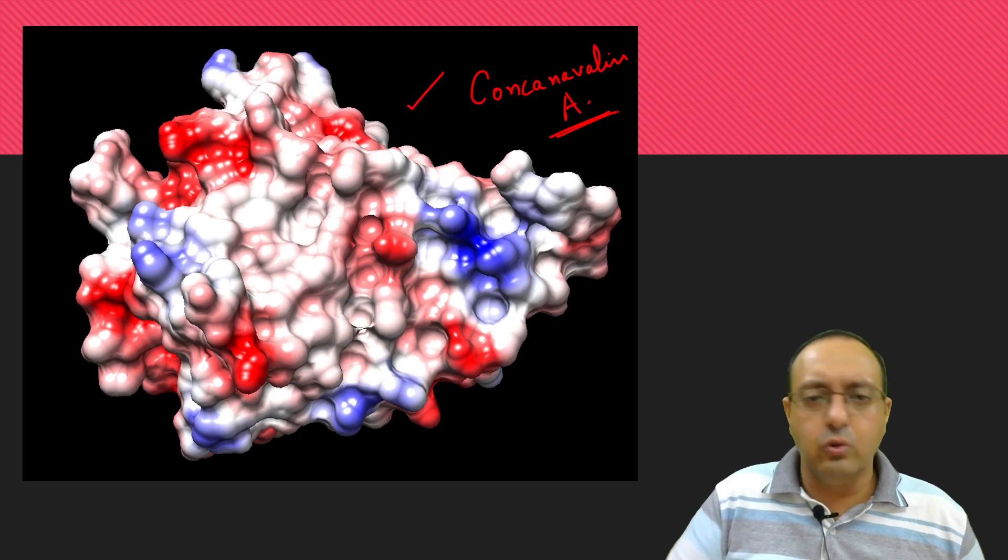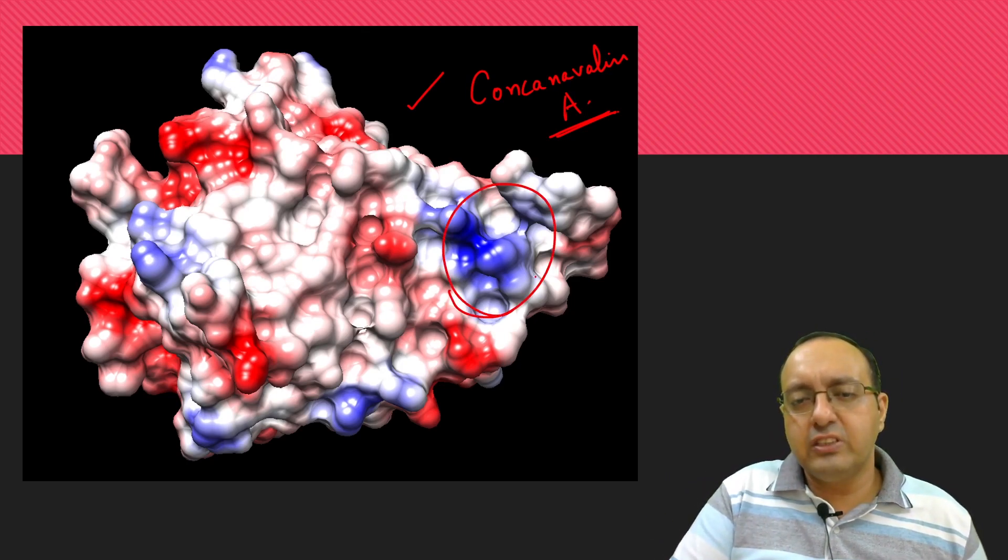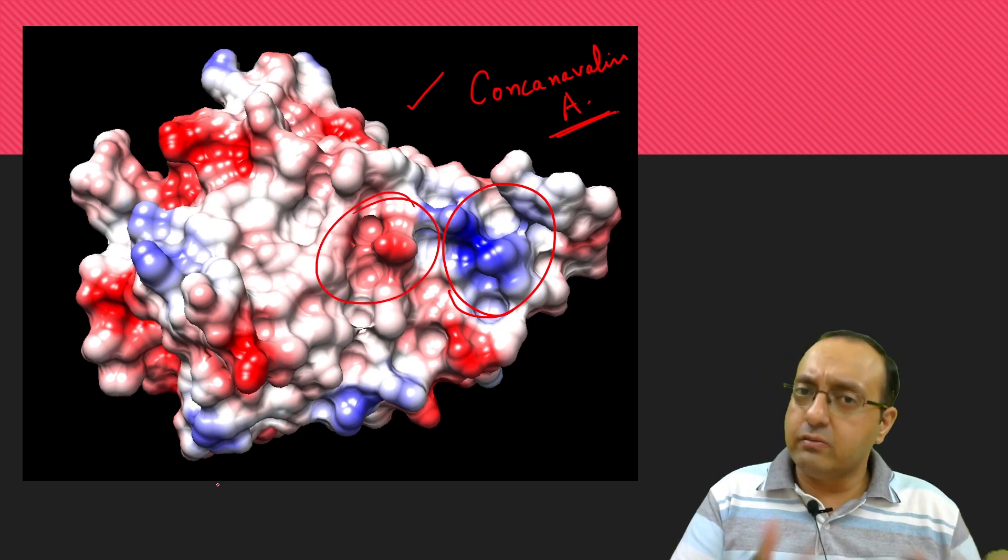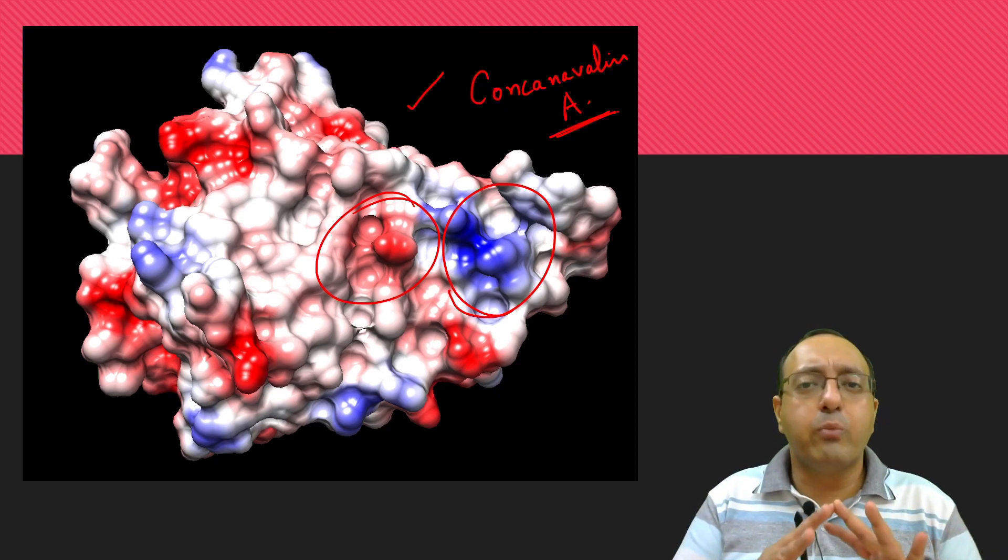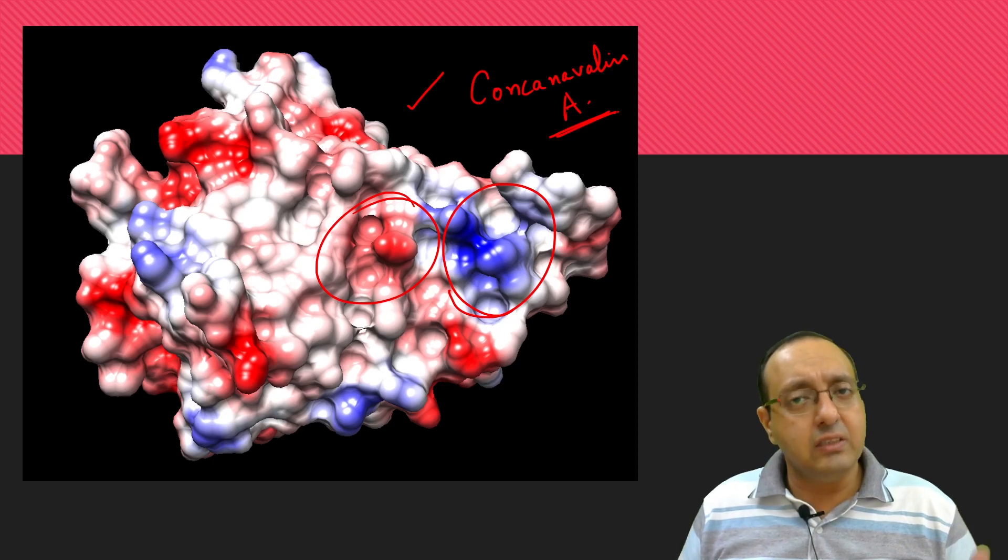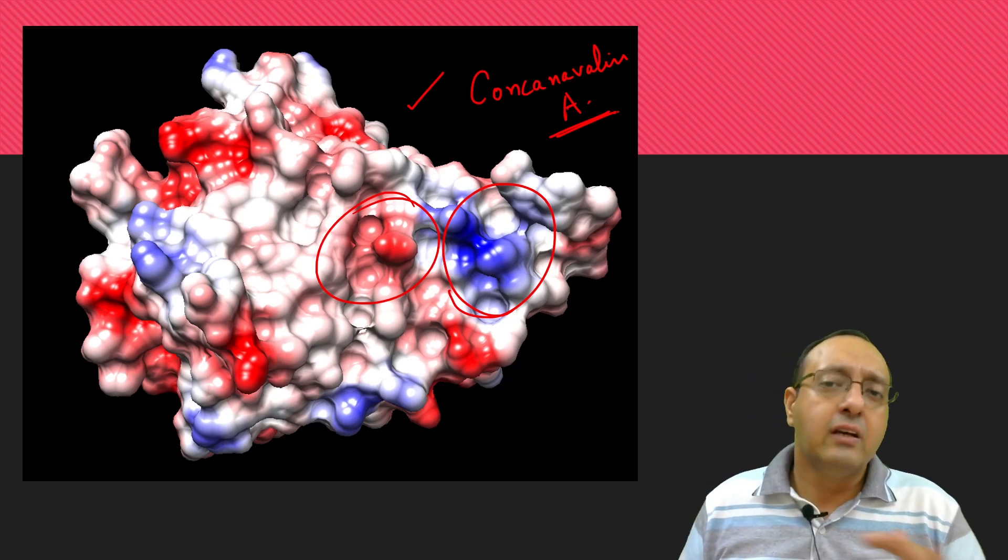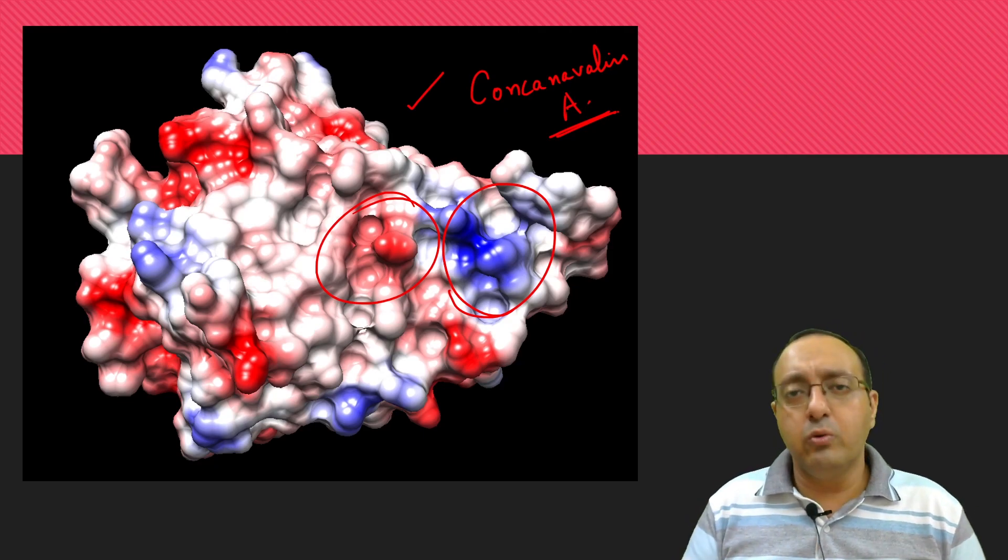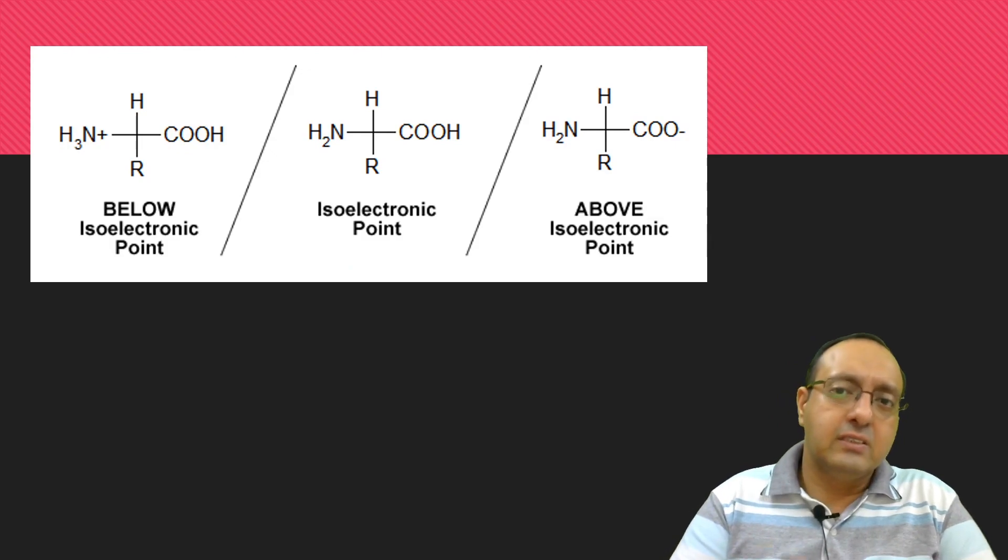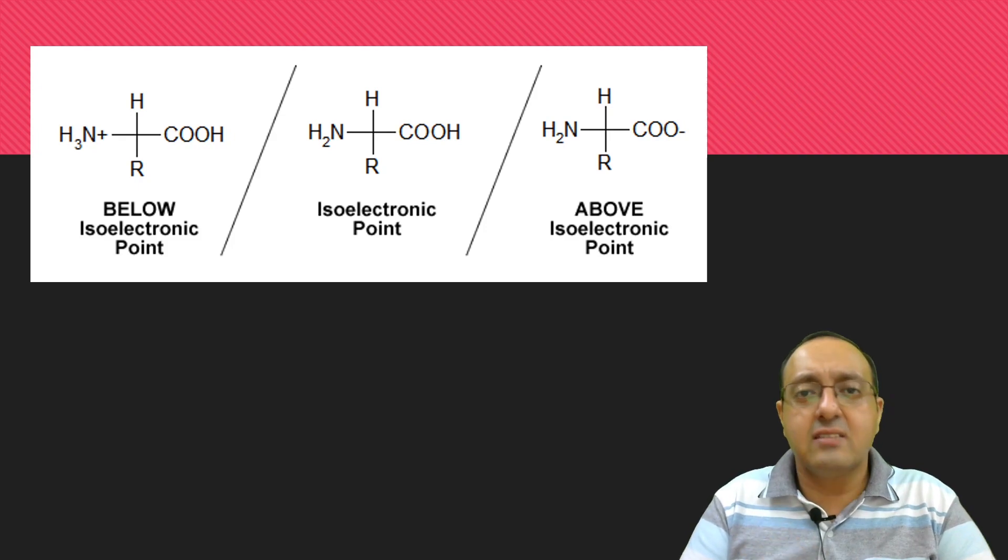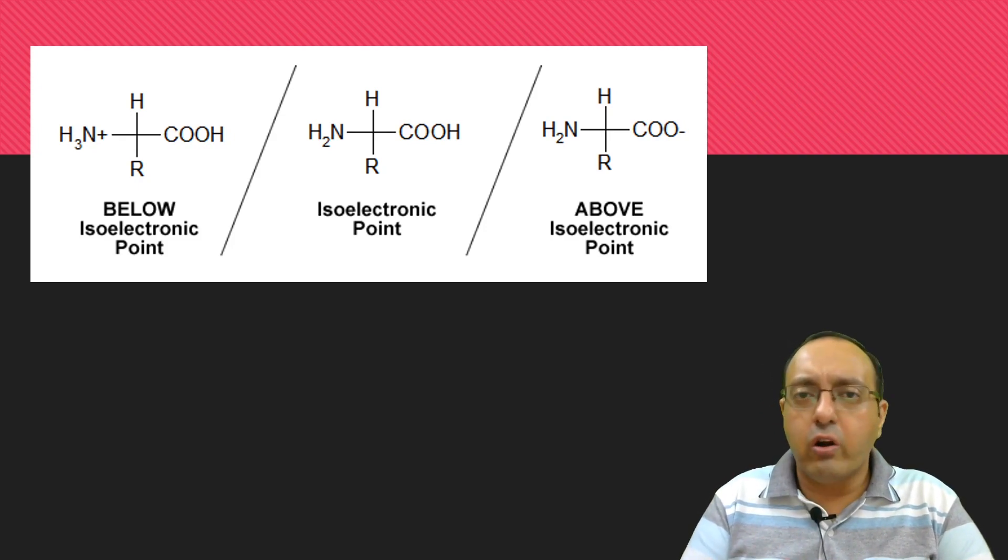It will have a mixture of positively charged amino acids as well as negatively charged amino acids on its surface as well as on the inside. A protein will have a net charge based on how many negative and positively charged amino acids are there. Negatively charged amino acids, for example, aspartate and glutamate, and positively charged amino acids like lysine, arginine, and histidine contribute to the overall charge of the protein.